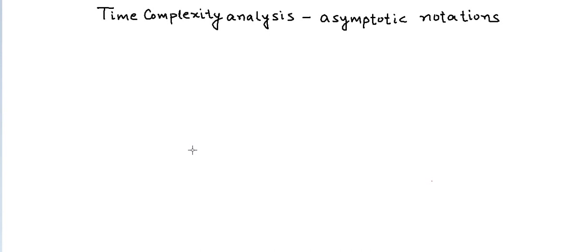In this lesson we will learn about the concept of asymptotic notations as a way to classify the running time of algorithms into some generic and broad classes or sets. In the previous lesson we had seen how to calculate the running time expression for algorithms using the concept of a hypothetical model machine. So why do we really want to classify the running time of algorithms into these broad classes?